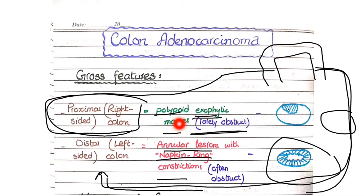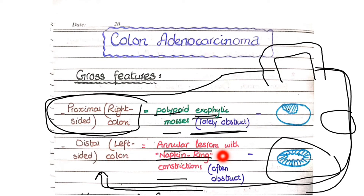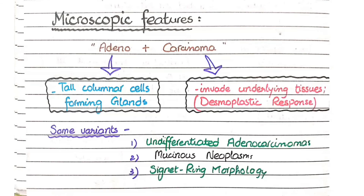To summarize the gross features: you see annular lesions with napkin ring constrictions in left-sided tumors, and polypoid exophytic masses in right-sided tumors. Tumors in the proximal or right-sided colon rarely cause obstruction, whereas tumors in the distal or left-sided colon often cause obstruction because they are annular lesions occupying the whole 360 degrees of the colon.